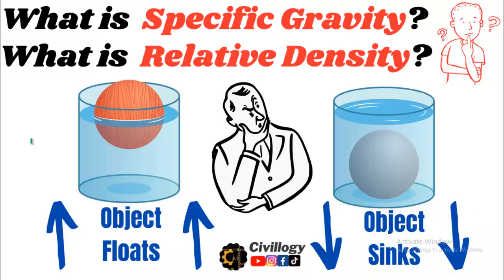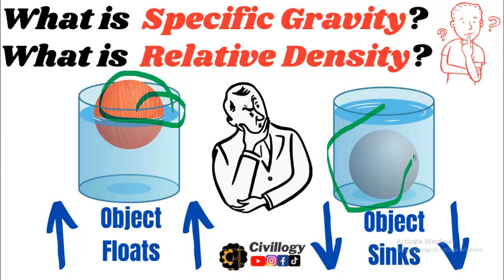Hello guys, welcome to my channel Saveology. You must have observed that certain things float in water, as you can see over here, and certain things sink in water. So what is the reason behind this? Why do certain things float and why do certain things sink in water? Our today's topic is related to this situation, and the terms specific gravity and relative density are related to this question.